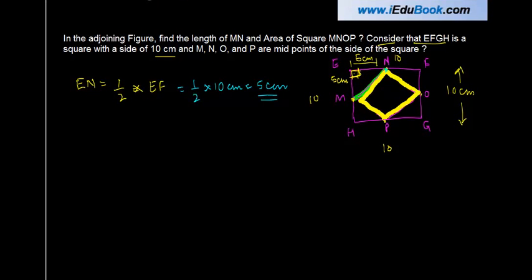Similarly, EM is equal to half of EH because M is the midpoint of this entire line, or half of 10 centimeters, which is 5 centimeters.